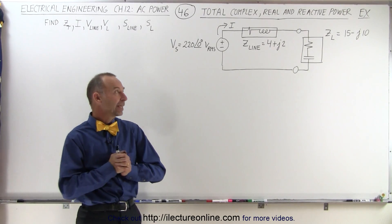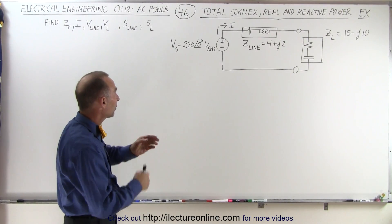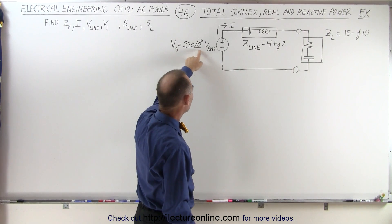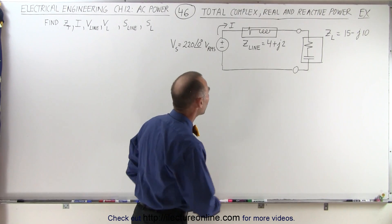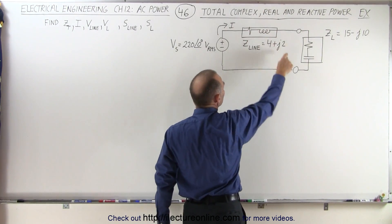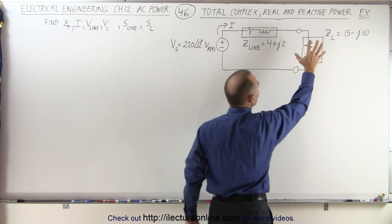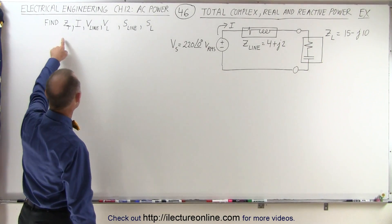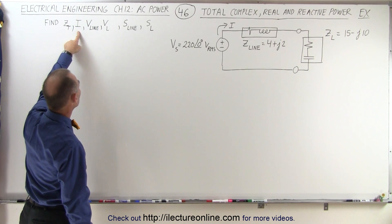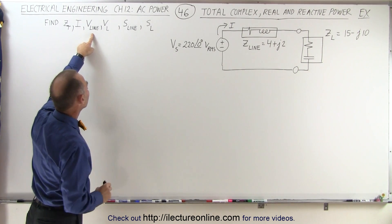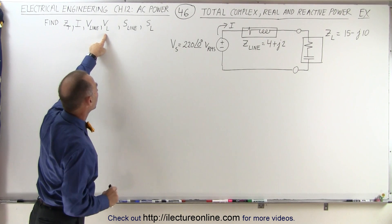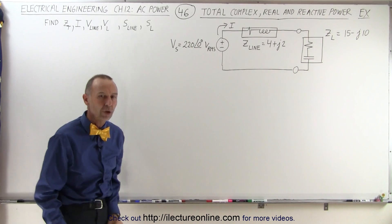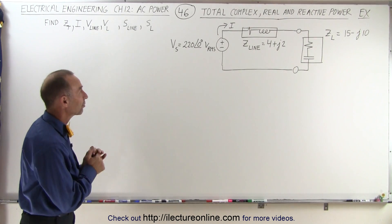Welcome to ElectronLine. Given the following circuit, we have a source of 220 RMS voltage with a zero degree phase angle. We have an impedance representing the impedance in the circuit lines, and we have an impedance representing the impedance of the load. What we're trying to find is the total impedance, the current in the circuit, the voltage drop across the line, the voltage drop across the load, the complex power across the line, and the complex power across the load.